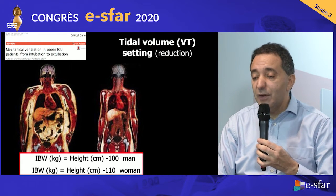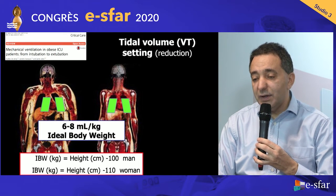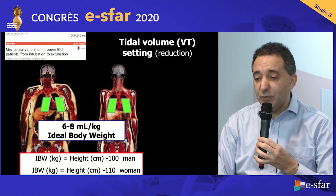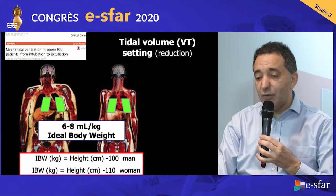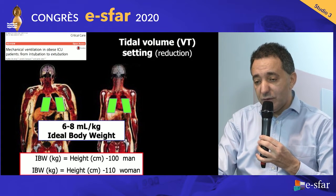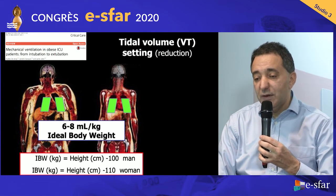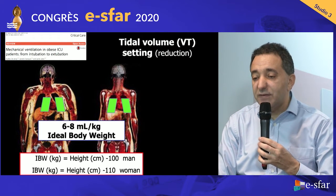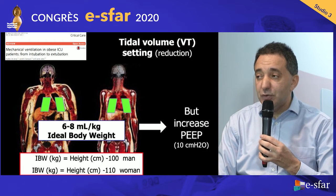Don't forget that tidal volume should be set according to ideal body weight, easily calculated as height minus 100 for men and height minus 110 for women. As shown here, an obese patient and a non-obese patient of the same height have the same lung volume — 6 to 8 mL/kg is recommended, with 7 being a good number. PEEP should be increased accordingly.